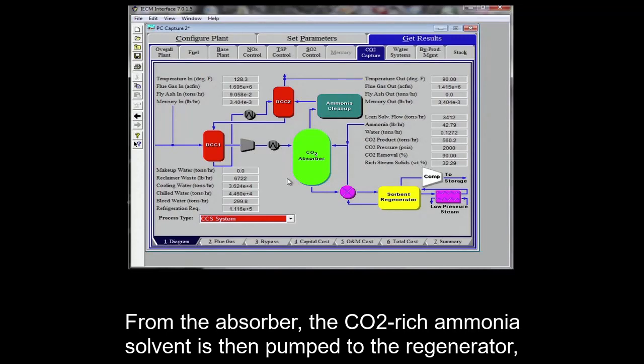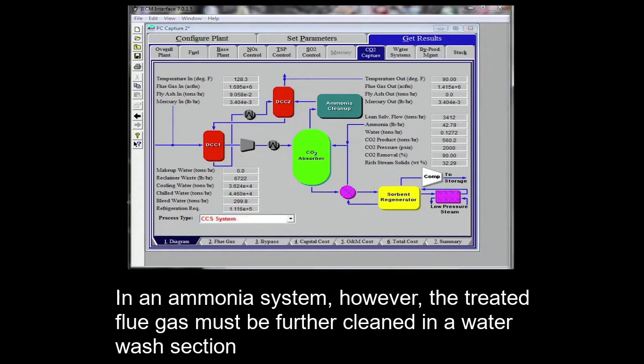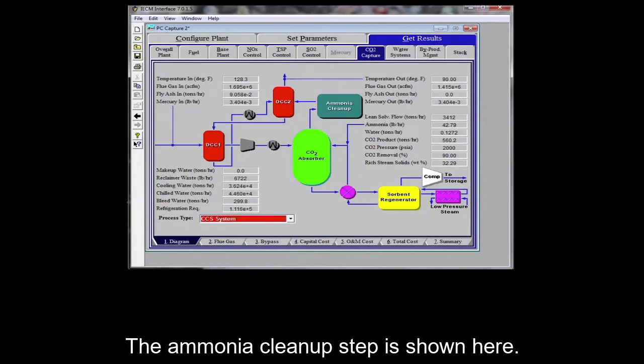Because of the low absorber temperature, typically around 10 degrees Celsius, this process is often referred to as a chilled ammonia process. From the absorber, the CO2 rich ammonia solvent is then pumped to the regenerator where the CO2 is released via heat with steam just as the amine system. In an ammonia system, however, the treated flue gas must be further cleaned in a water wash section to prevent high levels of vaporized ammonia from being released into the atmosphere from the power plant stack. The ammonia cleanup step is shown here.